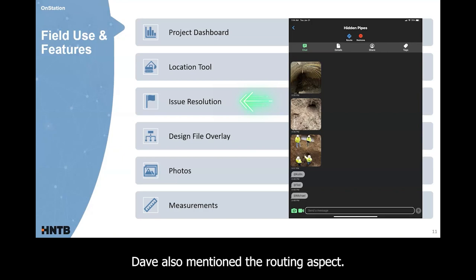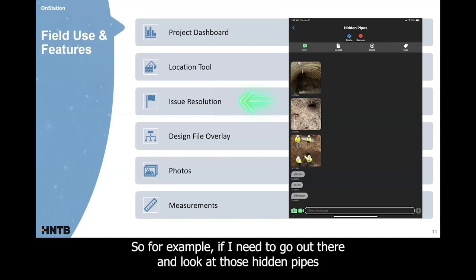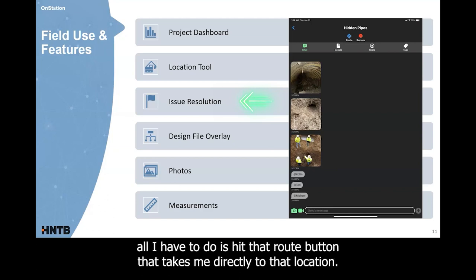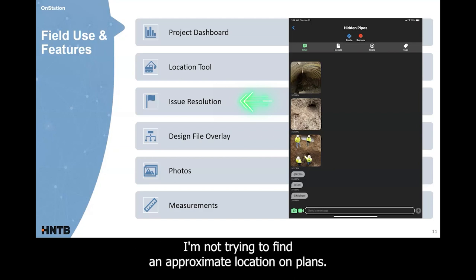Dave also mentioned the routing aspect. So for example, if I need to go out there and look at those hidden pipes and I couldn't be there at the time they were found, all I'd have to do is hit that route button that takes me directly to that location. I'm not trying to find an approximate location on plans. I'm not trying to just guess based on landmarks. I go straight there.